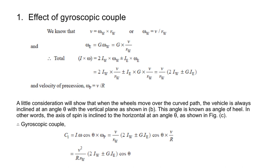Substituting the values of Iω and ωp = v / R, the gyroscopic couple C1 is obtained as: C1 = (v² / R) × (1 / rw) × (2Iw ± G × Ie) × cos θ. The plus sign is used when the engine and wheels rotate in the same direction; the minus sign is used when they rotate in opposite directions. This expression combines the gyroscopic couple due to the wheels and due to the engine.